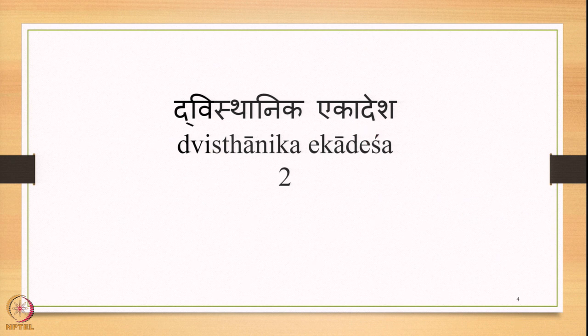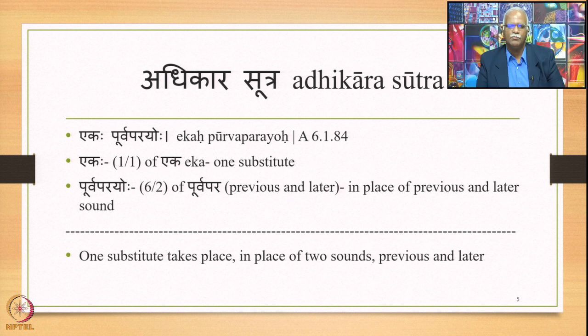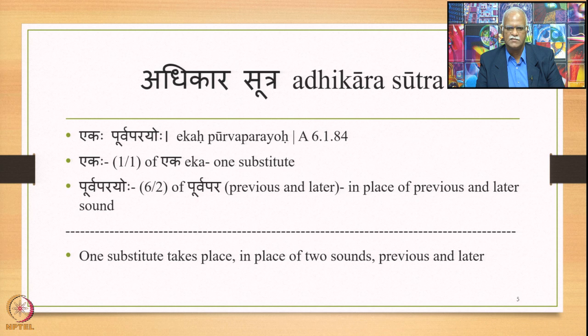We applied the same procedure to the second type, namely Dvishthanika Ekadesha, where we have two substituents and one substitute. This is stated by the Adhikara Sutra Ekapurvaparayoho 6.1.84, where Ekka represents one substitute and Purvaparayoho means in place of the previous and latter sound. So this Sutra means one substitute takes place of two sounds: the previous one and the latter one.